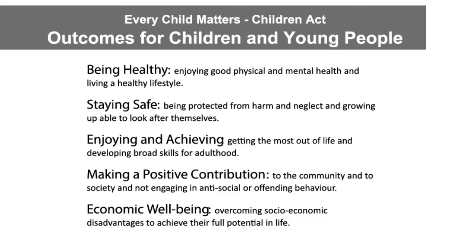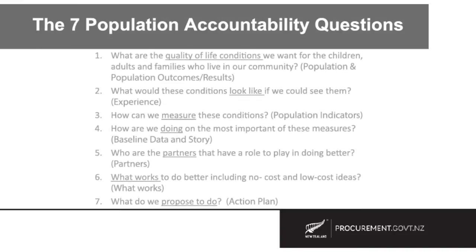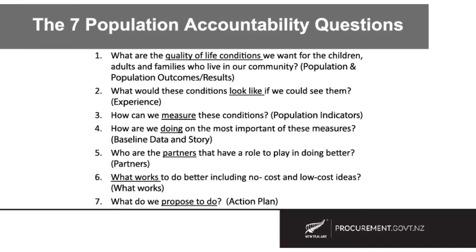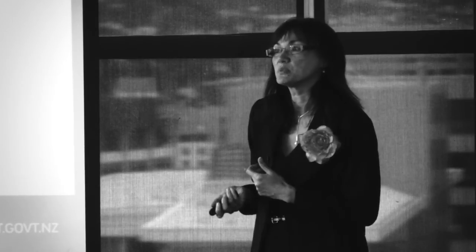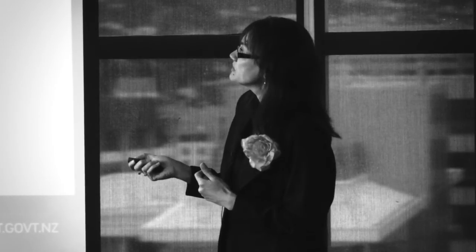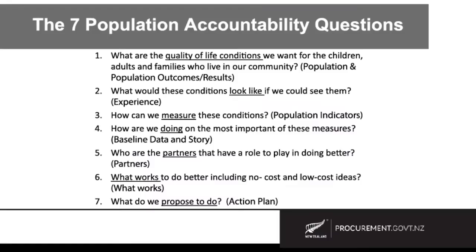You'll recall we talked about seven questions which take us from ends to means. These are the seven questions for population accountability. The first question is: what are the quality of life conditions or the conditions of well-being for children, adults or families in the community? This is about defining what your population results or outcomes are and who your population is. Question two is: what would these conditions look like if we could see them? We call this 'the experience' — a more in-depth description of the population outcomes or results.